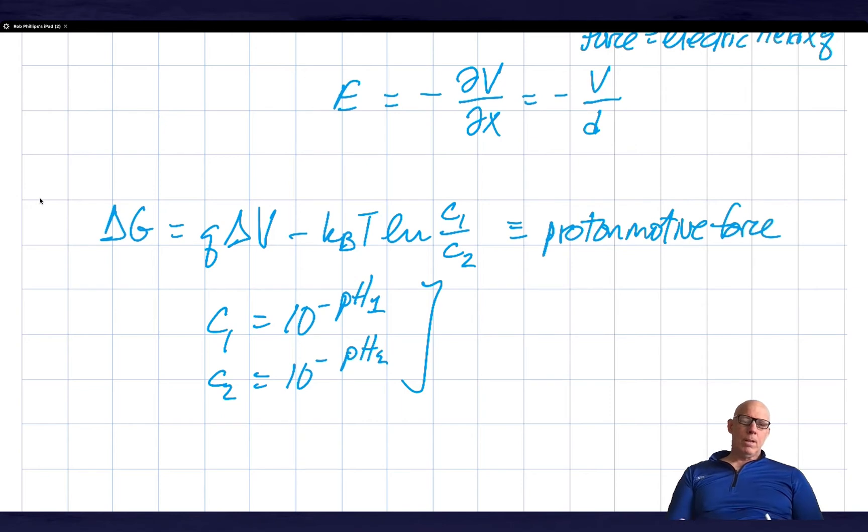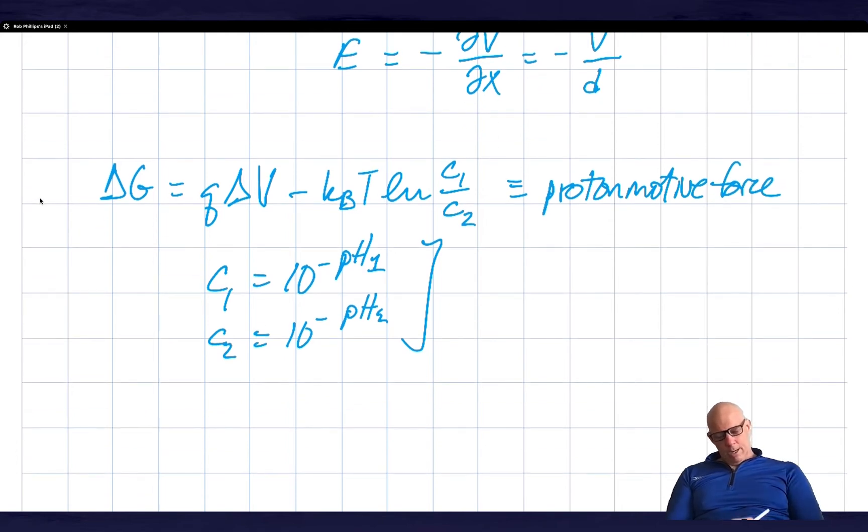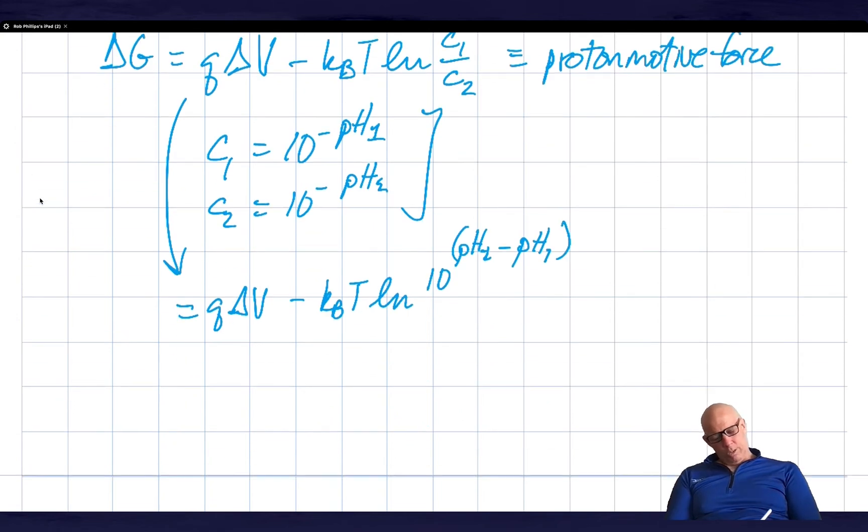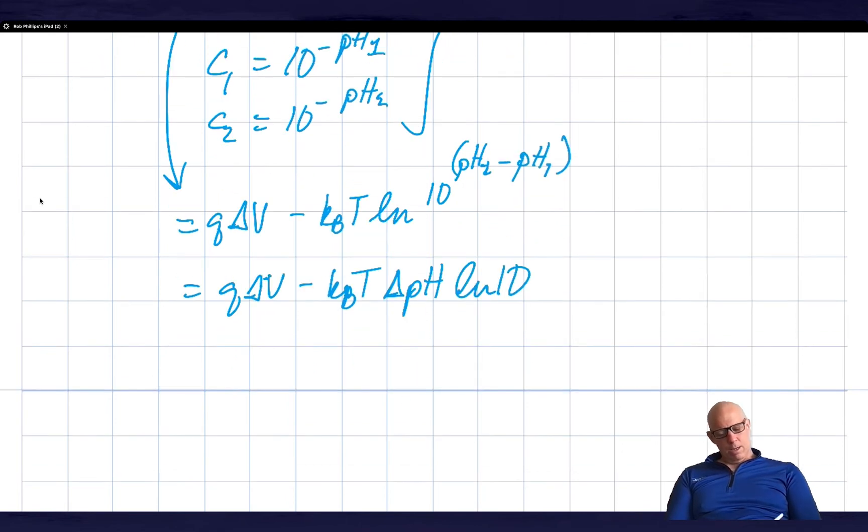pH tells you how to compute the concentration of hydrogen ions, so if I have a given pH like 6, then that means that the concentration is 10 to the minus 6 in molars, so it's micromolars. So I can plug that in and I'm left with Q delta V minus KBT log of 10 to the pH2 over pH1, which is equal to Q delta V minus KBT times delta pH times log of 10, which is of order 2.3.